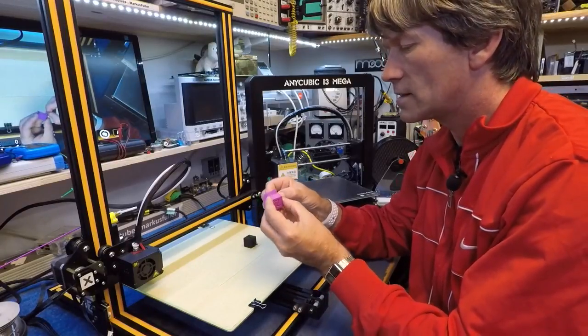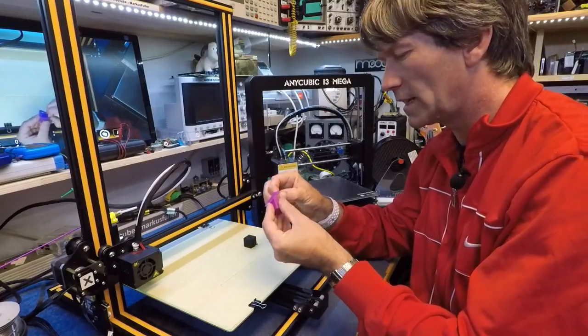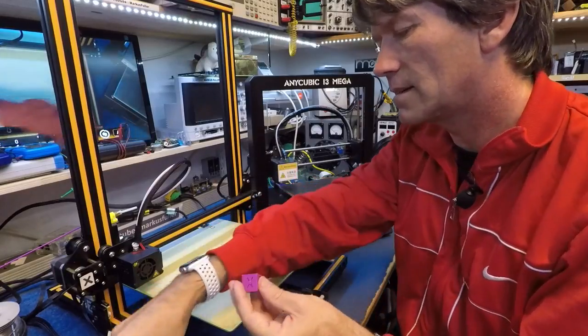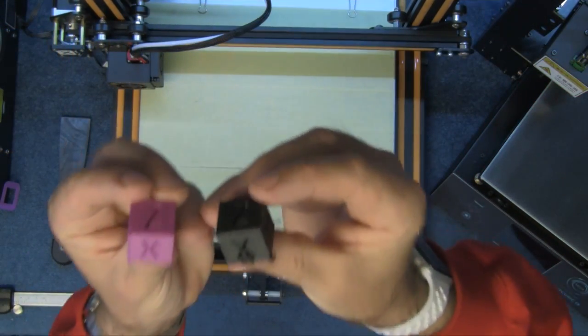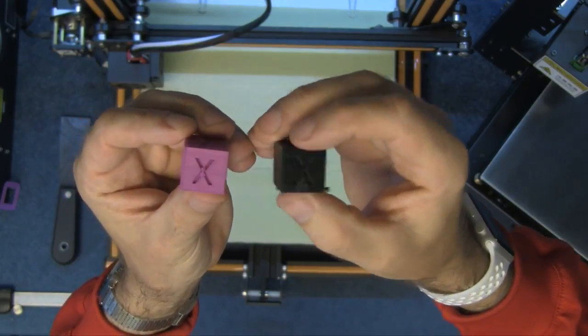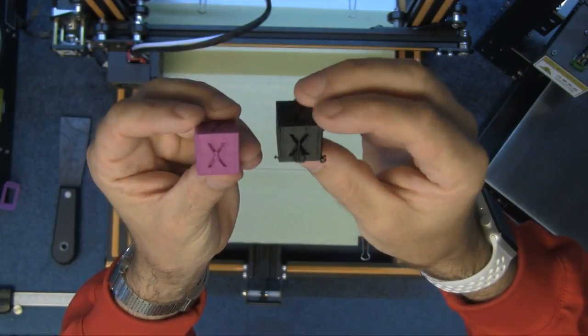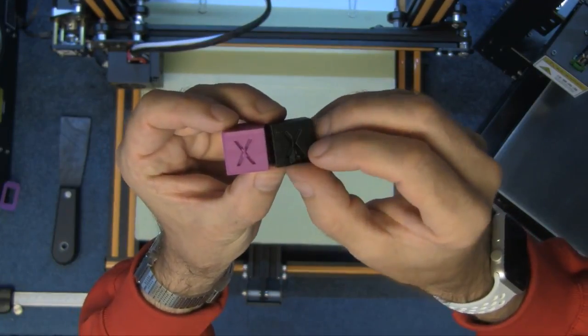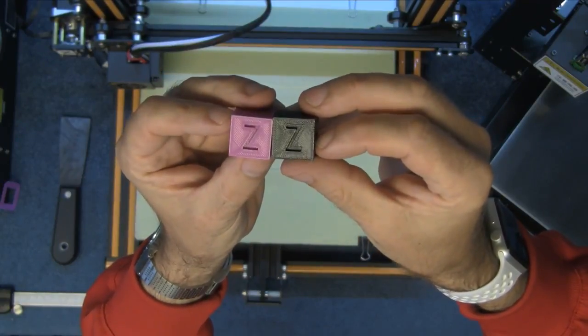And to be honest with you, just by looking at it, the Creality CR-10 looks like it's done a slightly better print. Let me hold that back up there again. If you can see, the Creality is the purple colored one and the i3 Mega is the black one. Yeah, there's a little bit of the hot snot dripping away here but I think that will break off. The Zs look the same.